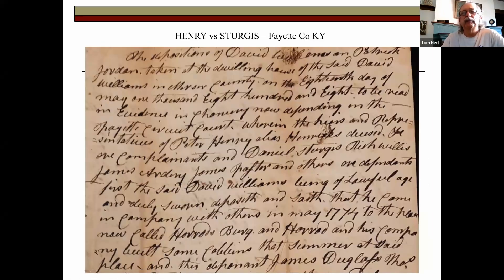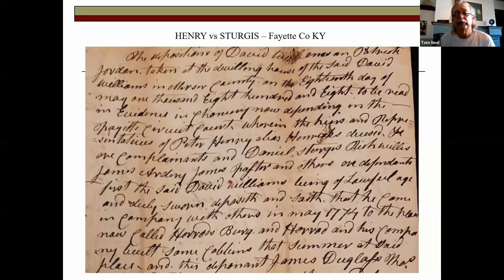Here's a deposition of David Williams on Patrick Georgian, taken at the dwelling house of said David Williams on the 18th day of May 1808, listing all kinds of names. It says he came in company with others in May 1774 to the place now called Harrodsburg. These are records from the Kentucky State Archives in Frankfort — court packets of various suits trying to work out who owned land that my ancestor Peter Hendricks claimed, along with many other people. There's deposition after deposition, which is wonderful for tying a particular area together.